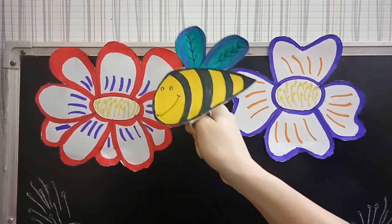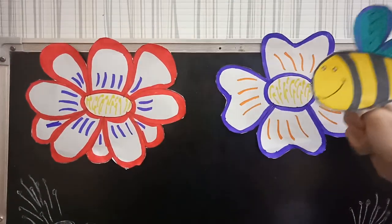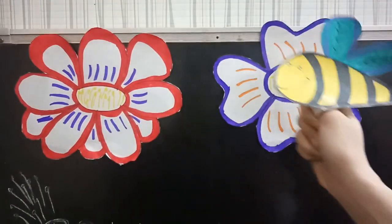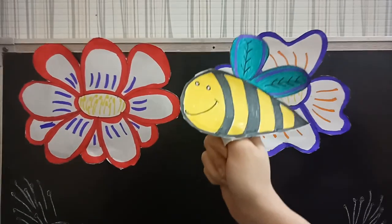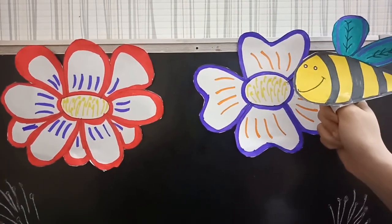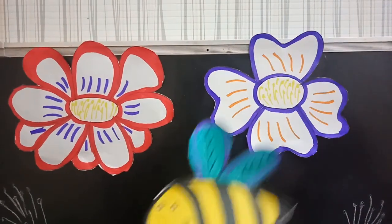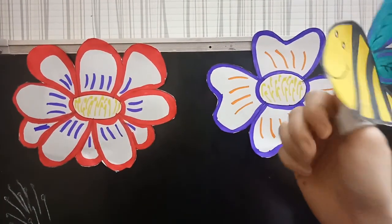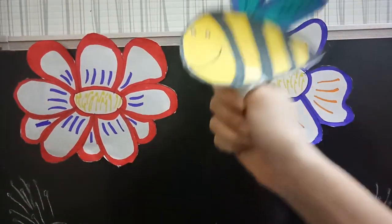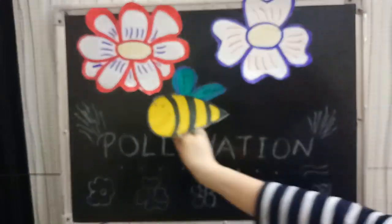Hey, what are you doing? I'm collecting nectar and pollen from the flower of a plant. Nectar is a liquid made by flowers of different plants — it is very sweet because it has sugar in it. Bees use this nectar to make honey. Our today's topic is all about pollination.